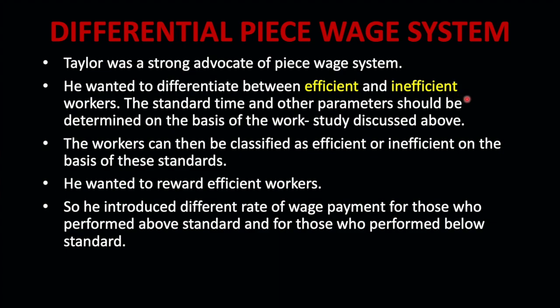In standardization, we studied that there should be a standard time to complete a job. In time study, we calculated that if the standard time is 10 hours and a worker is producing 10 units, he is an average worker. But if he is producing more than that, then we call him an efficient worker. And if he is producing less than that — 9 units, 8 units — then we call him an inefficient worker.